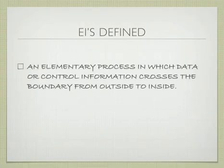EI is defined as an elementary process in which data or control information crosses the boundary from outside to inside. It's rated based upon data elements and file types referenced.